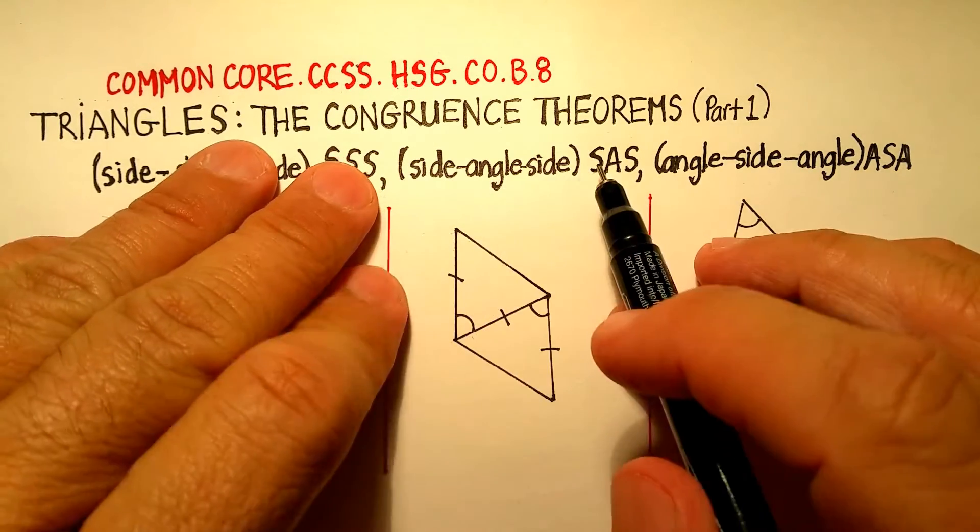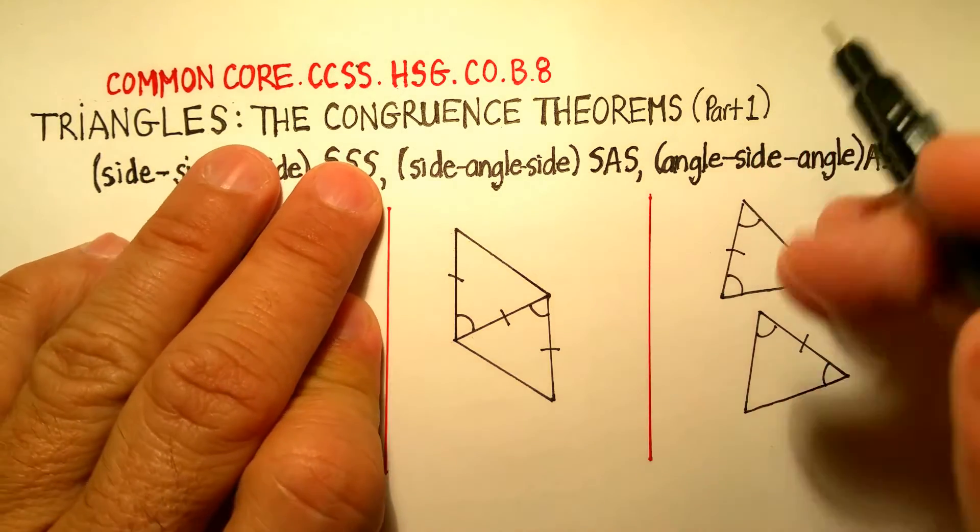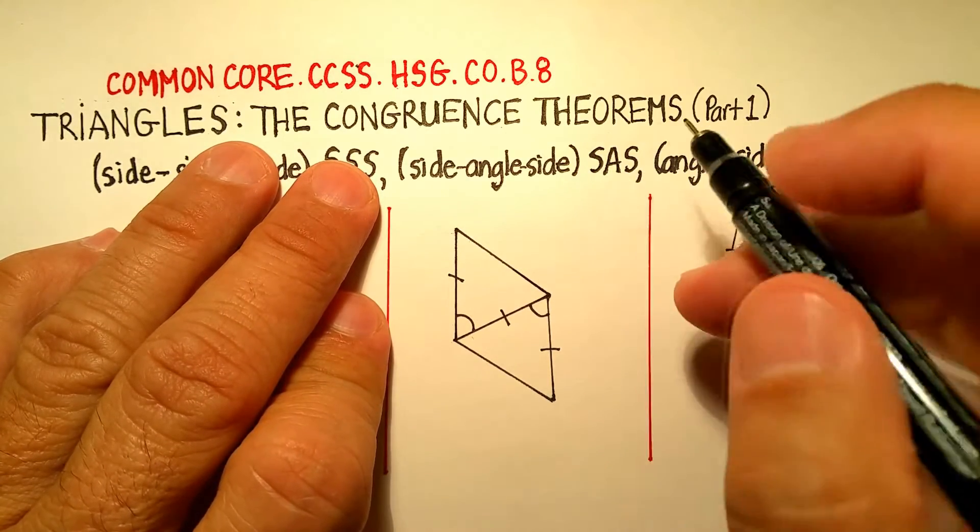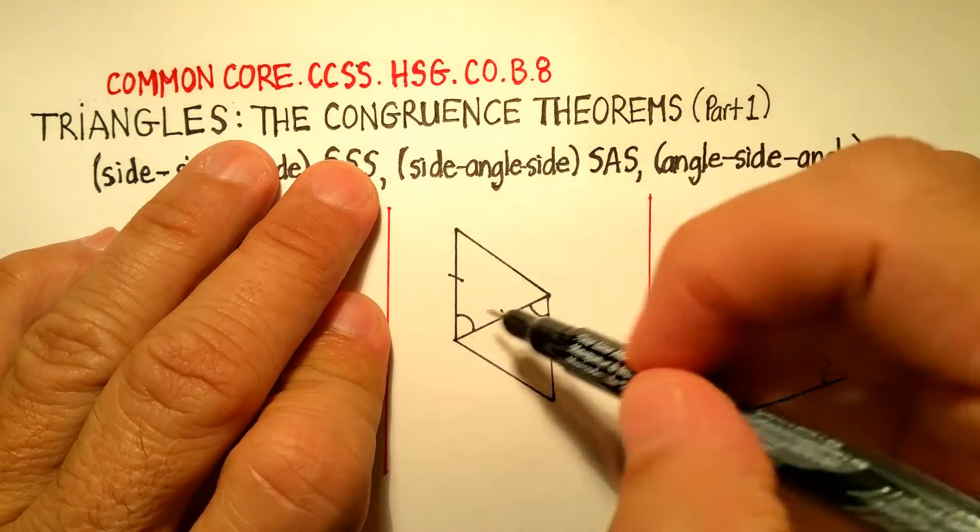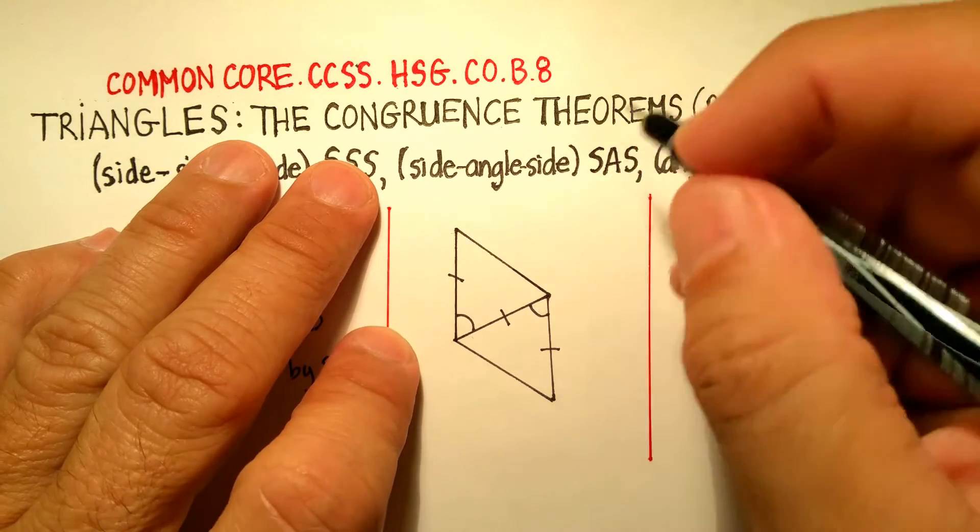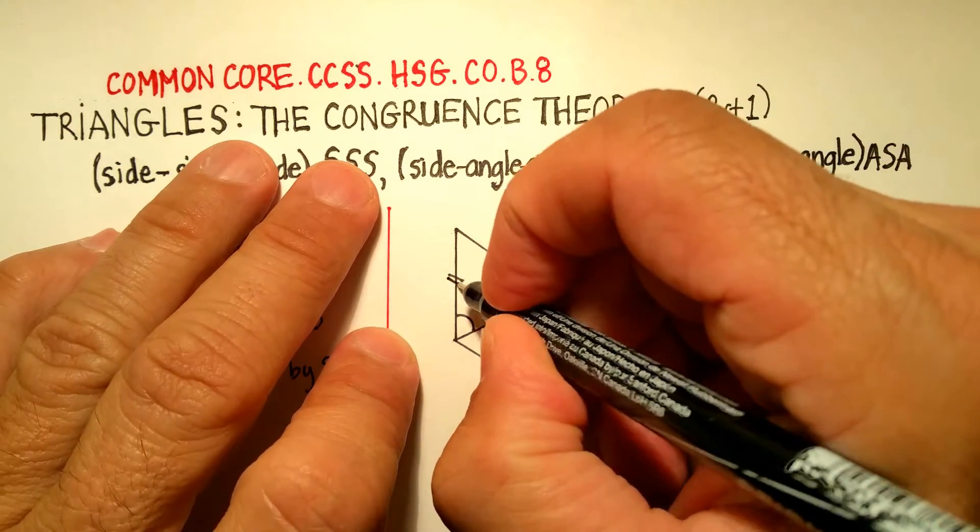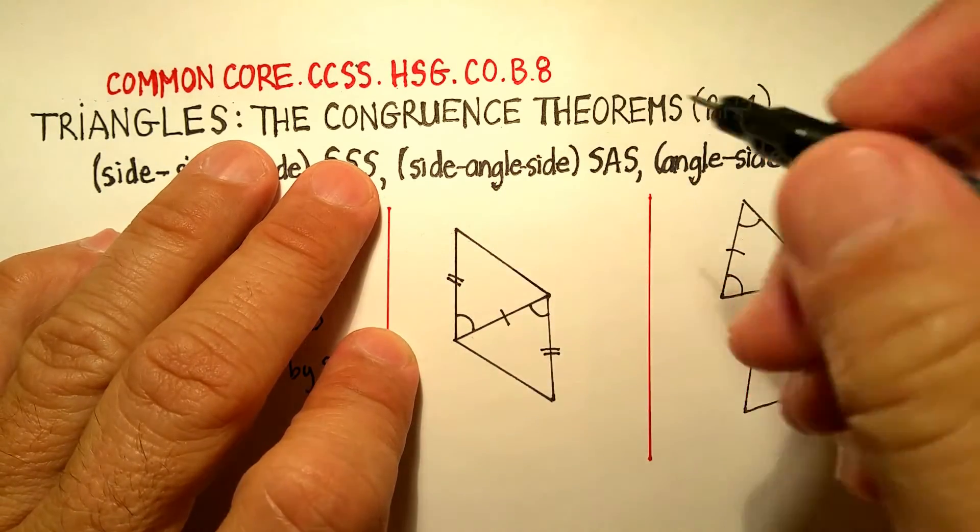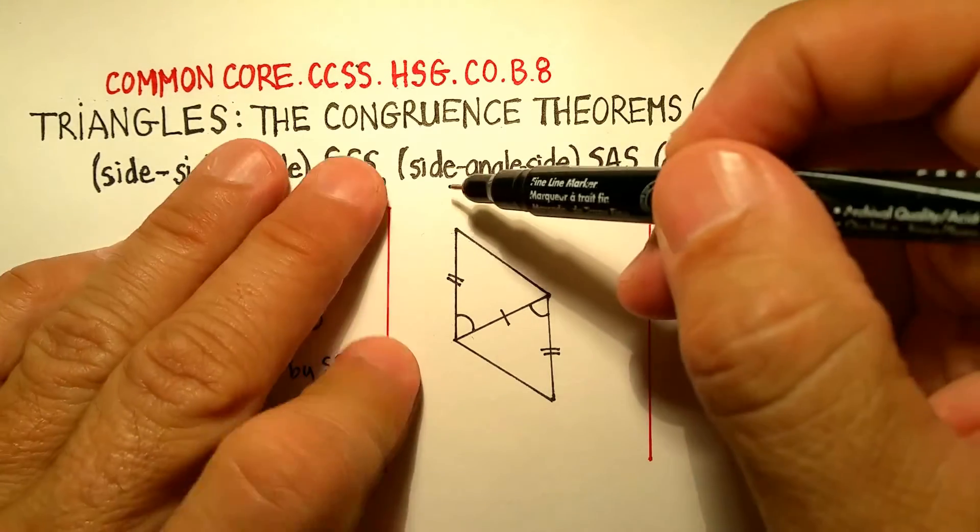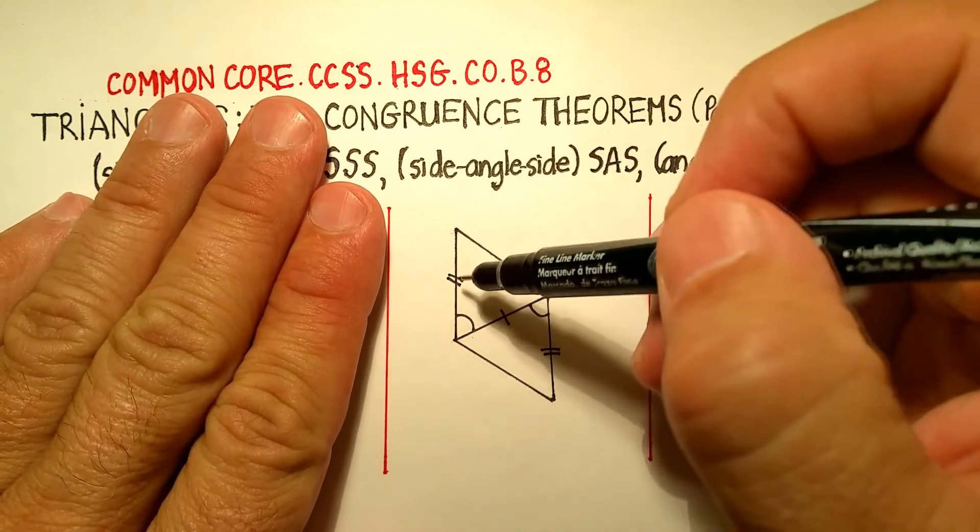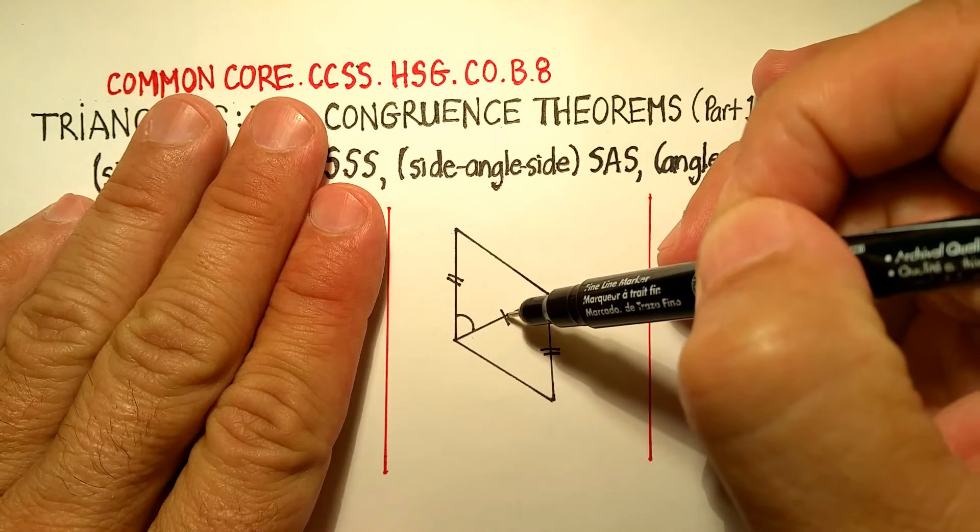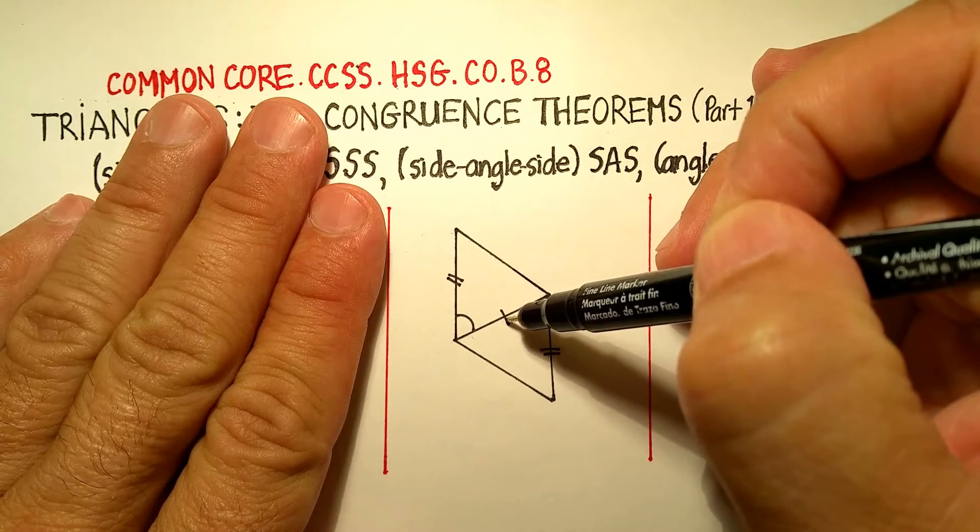Now the side-angle-side is very similar, except that there's a slight difference in how it's written and then the order of what is congruent. Now what you'll notice here, I'm going to make this a little bit different. According to this one, the order has to be side, and then angle, and then side of a triangle.